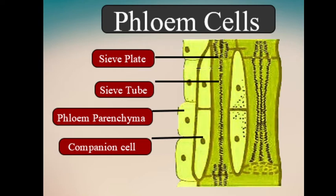Other substances like plant hormones are also carried by the phloem tubes from one part of the plant to another part.